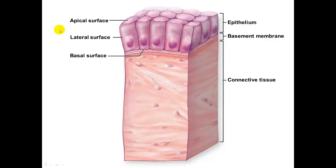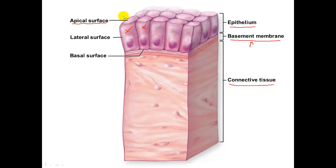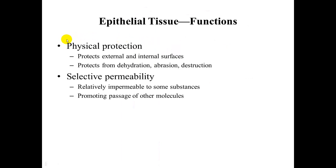Here is a figure detailing the structure of epithelial tissue. We can see the epithelium as the top layer, the basement membrane sandwiched between the epithelium and the connective tissue. This basement membrane attaches the epithelial to the connective tissue and is selective. Looking at the cells, we have the apical surface exposed to the external environment or lumen, the basal surface next to the basement membrane, and the lateral surface on the sides of the cells, which often has intercellular junctions holding adjacent cells together.